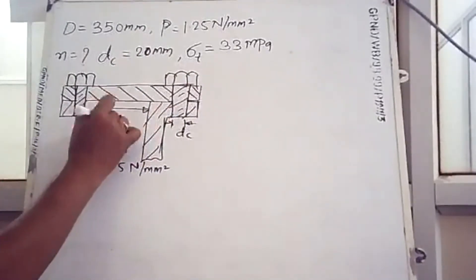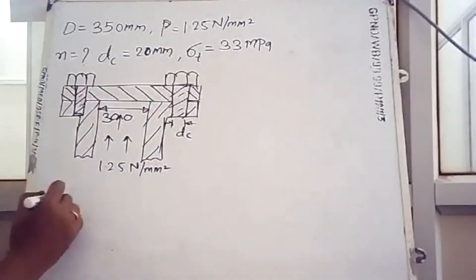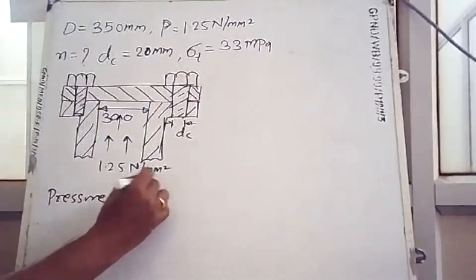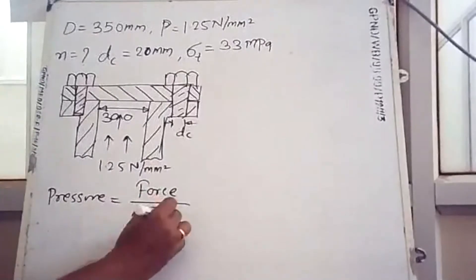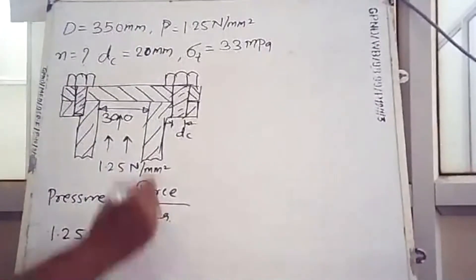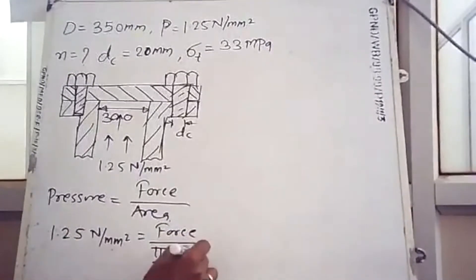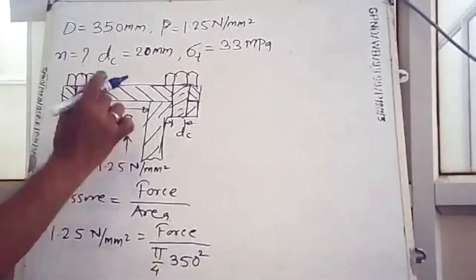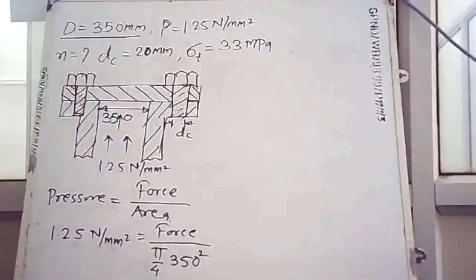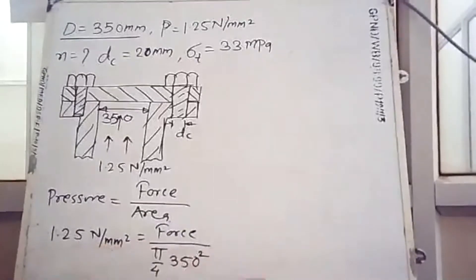The inside diameter of this cylinder is given as 350 mm. Whatever pressure is there, that pressure acts on this area. We can put the relationship between this pressure and the force applied over the area of the cylinder. The pressure is 1.25 newton per mm square acting on area pi by 4 times 350 squared, which gives us the total force.